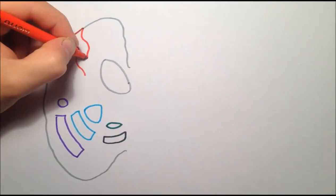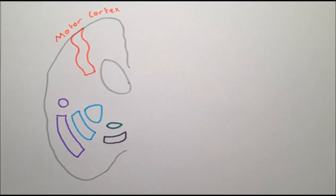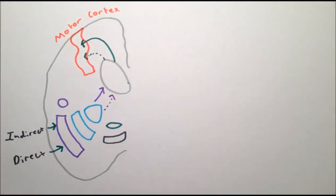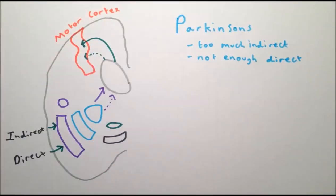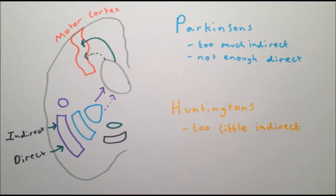In conclusion, the basal ganglia are a collection of nuclei within the brain. They form part of a loop between the cortex, basal ganglia and thalamus. One of the classic models of the basal ganglia is the direct and indirect pathways model, in which the direct pathway acts to excite the thalamus and thus excite the cortex, and an indirect pathway which acts to inhibit the thalamus and thus the cortex. This model has been successfully applied to disorders of movement, explaining key features of Parkinson's disease, which is due to excessive overactivity of the indirect pathway and insufficient activity of the direct pathway, and Huntington's disease, which is due to insufficient activity of the indirect pathway.